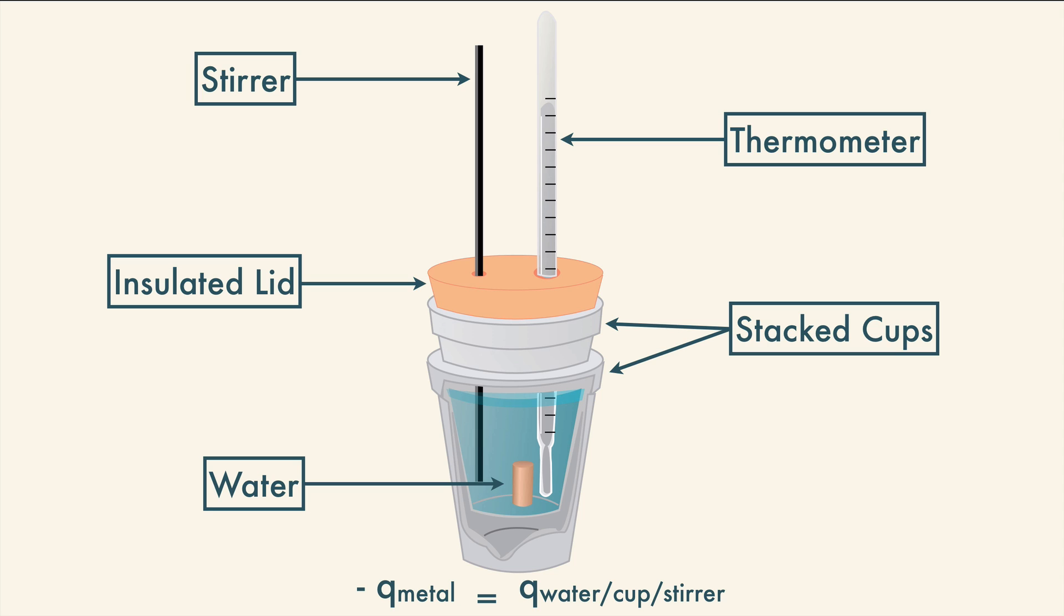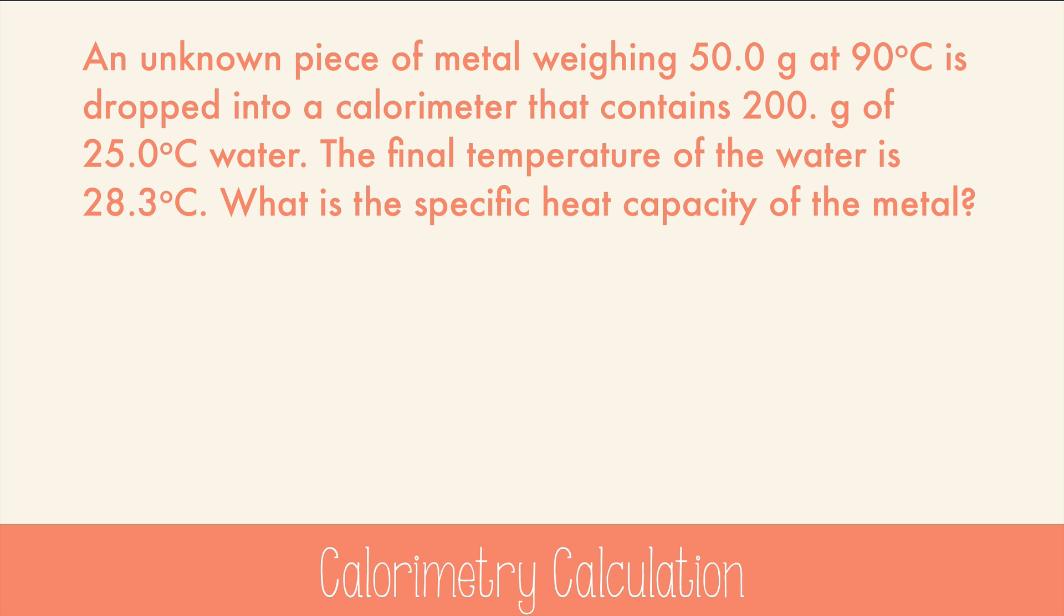Let's try a calculation to figure out heat transfer with the simple version. An unknown piece of metal weighing 50 grams at 90 degrees Celsius is dropped into a calorimeter that contains 200 grams of 25 degree water. The final temperature of the water is 28.3 degrees Celsius. What is the specific heat capacity of the metal? First, we'll calculate the amount of heat absorbed by the water because we have all the information we need. 200 grams of water, 4.184 joules per gram degrees Celsius, and the final minus initial temperature. Grams cancel, Celsius cancels, and our answer is 2,760 joules for the water.